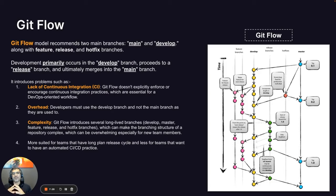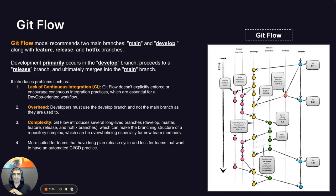Git Flow introduces some key challenges. The first is its lack of support for continuous integration. As we jump between these different branches, this is not a suitable structure for an organization looking to do multiple deployments per day or week to the production environment, because we keep testing across two different branches and can easily lose track of where the latest copy of code is.